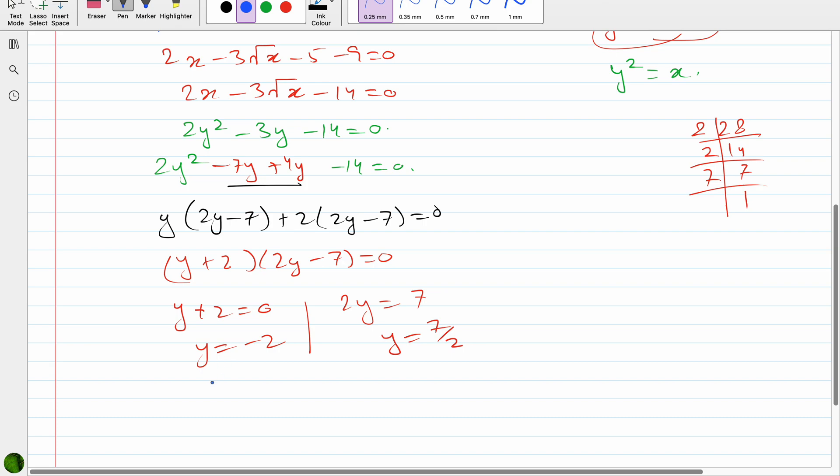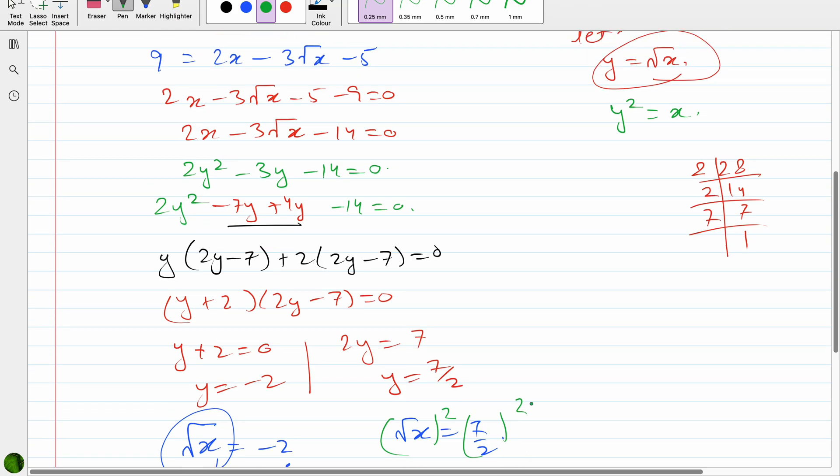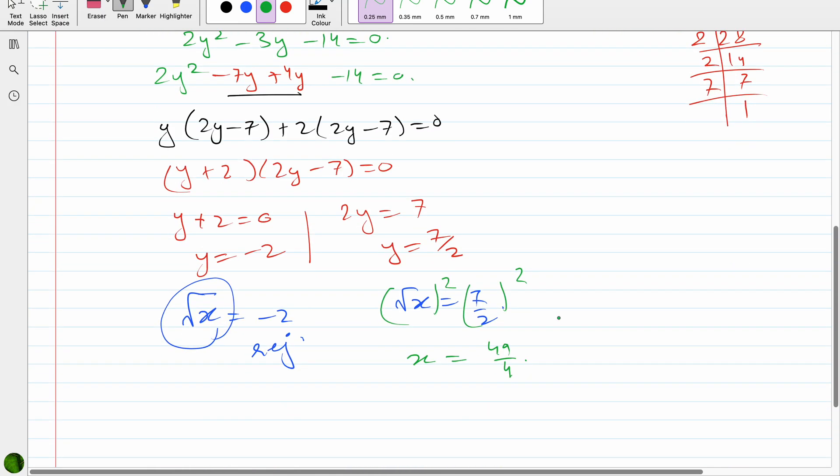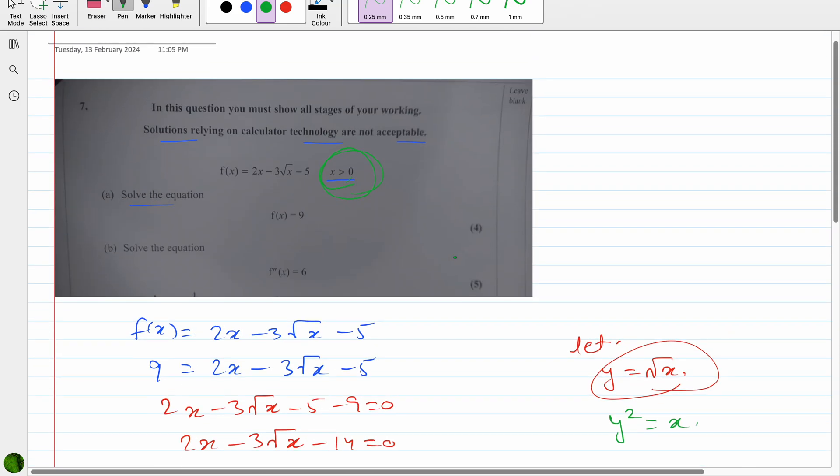So I can say √x = -2, and I'm rejecting this. Square root number cannot be negative. On the other side, √x = 7/2. Now we take square on both sides, so x = 49/4. And also depending on this domain, it is greater than 0. So x = 49/4 for the given condition.